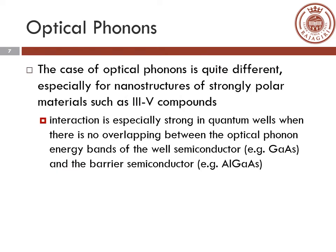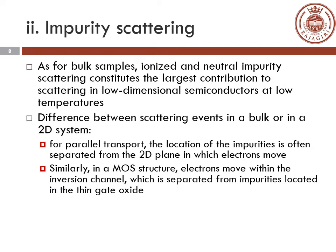The case of optical phonons is quite different, especially for nanostructures of strongly polar materials such as Group III-V compounds. The interaction is especially strong in quantum wells when there is no overlapping between the optical phonon energy bands of the well semiconductor and the barrier semiconductor. As for 3D semiconductors, ionized and neutral impurity scattering constitutes the largest contribution to scattering in low dimensional semiconductors at low temperatures.